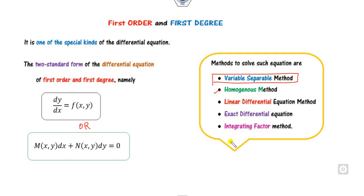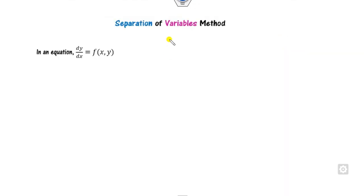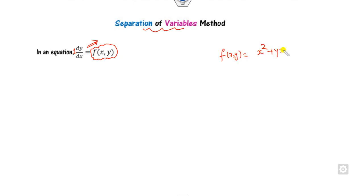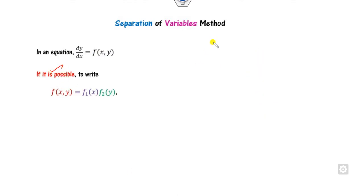Now the first question arises: what is the meaning of 'separable'? If you have the first order differential equation, make sure the coefficient of dy/dx is 1. If you write f(x, y) — it can be of the form x squared plus y, or x plus y — if you are able to write the function as a product of two separate functions, then only the separable method is applicable.